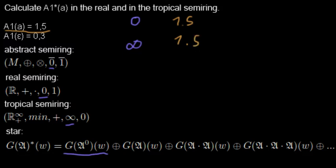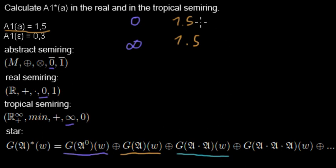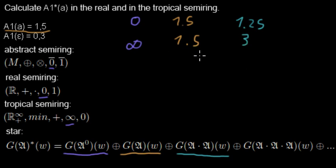Now let's look at the next term: the multiplication of the weight with itself. For the real semi-ring, multiplication is the usual multiplication, so when I multiply it with itself I get 1.25. For the tropical semi-ring, multiplication is addition, so we double the weight and get 3.